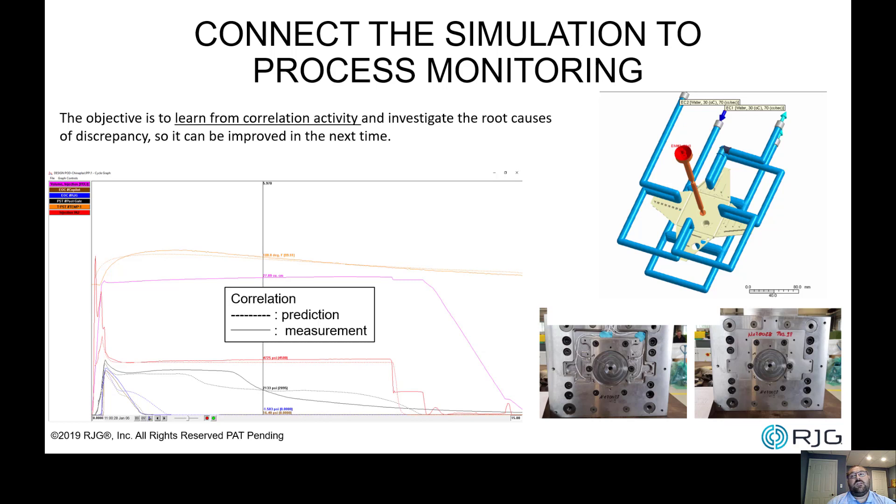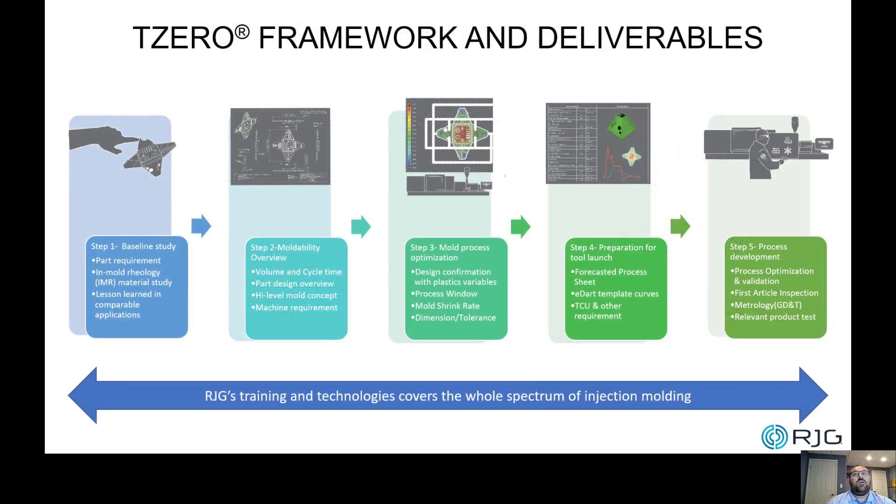As we are just at the starting point of the initiative, a more practical purpose should be learning from the correlation activity and investigate the root causes of discrepancy so that it can be improved in the future. Here you are looking at the T0 framework RJG developed over the years. The flowchart exhibits the scope of the projects we offer as a service, including the forecasted machine setup sheet and predicted template transfer, as we presented earlier.